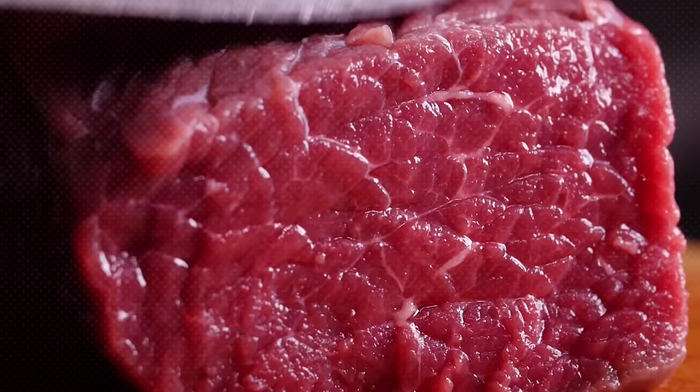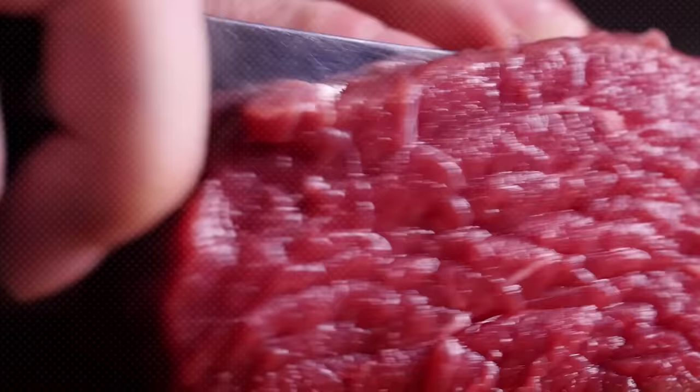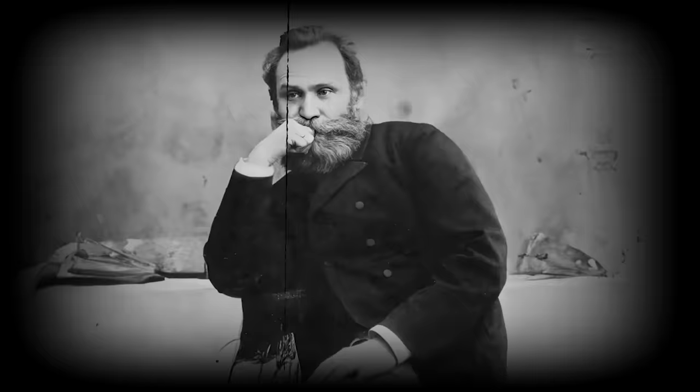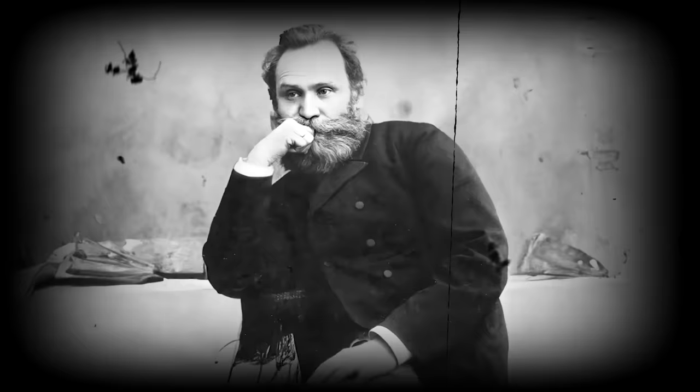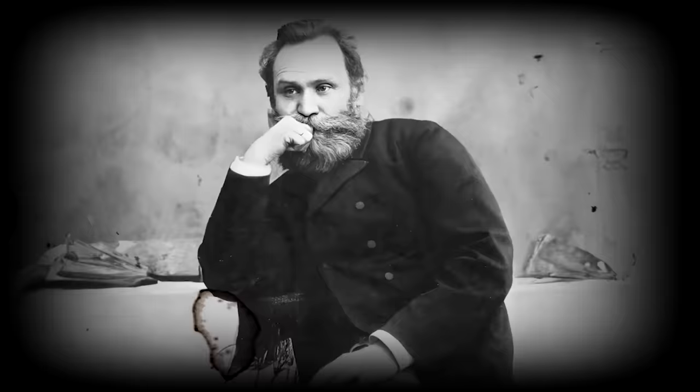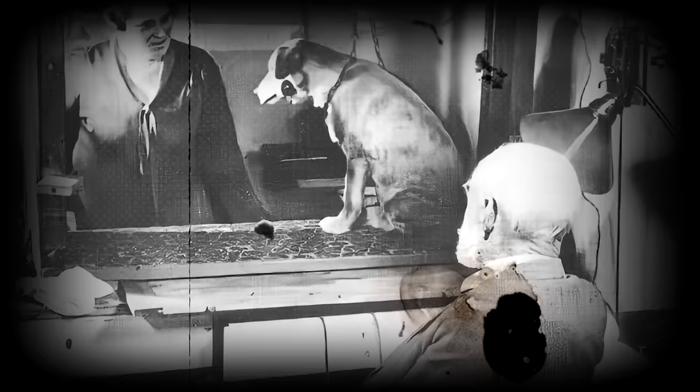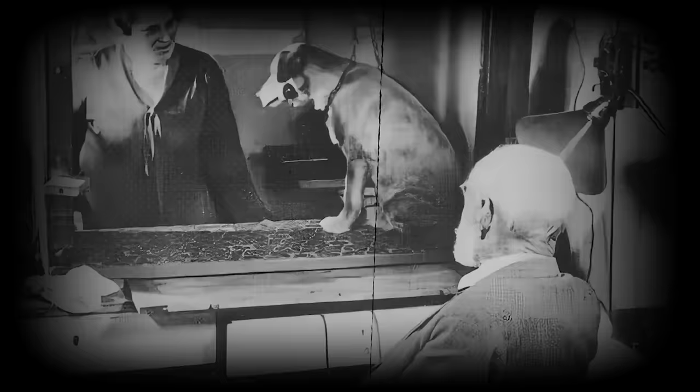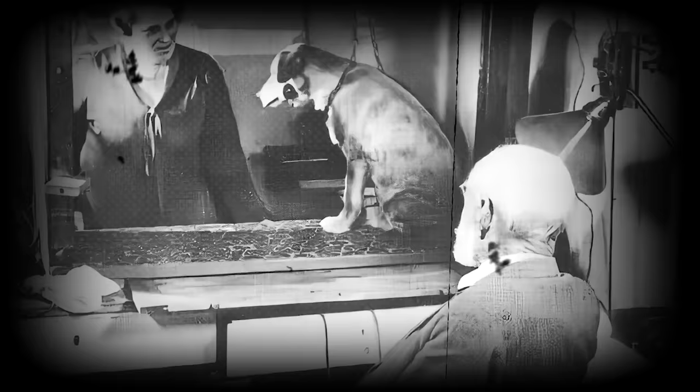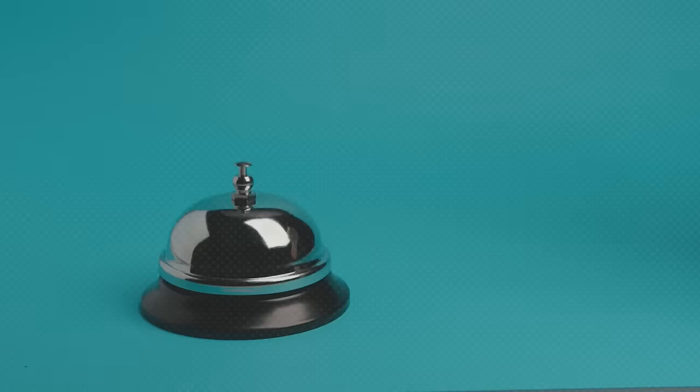However, during his research, he noted something interesting. Not only did the dogs begin to salivate when red meat was put into their mouths, but even the sight of red meat would cause them to salivate. It was this observation that led Pavlov to his future work, developing what would become known as classical conditioning. His most famous example involved training dogs to salivate whenever they heard a bell ring, something now referred to as the Pavlovian response.